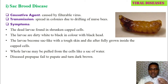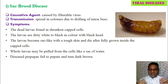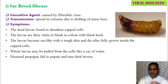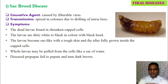Before the pupal stage, nurse bees cap and seal the cell. The larvae become sack-like with a tough outer body covering and die. When pulled out with forceps, the larva looks like a bag filled with water — a sack of water. The diseased pre-pupa, or full-grown larva, is unable to move into the pupal stage, fails to pupate, turns dark brown, and ultimately dies.